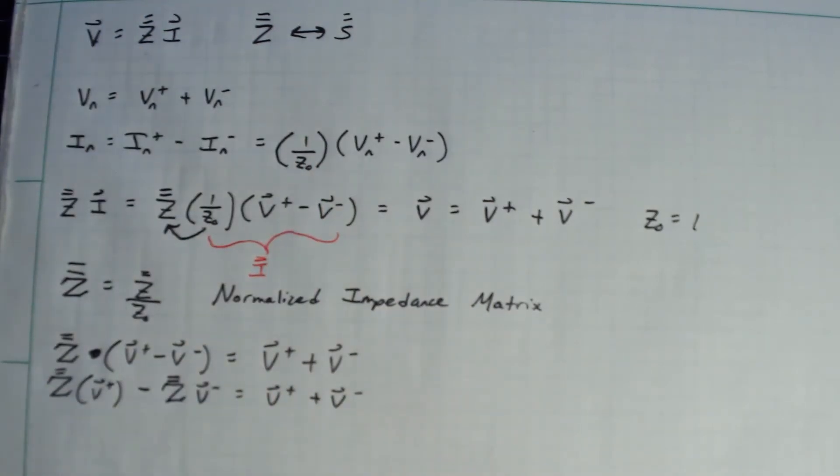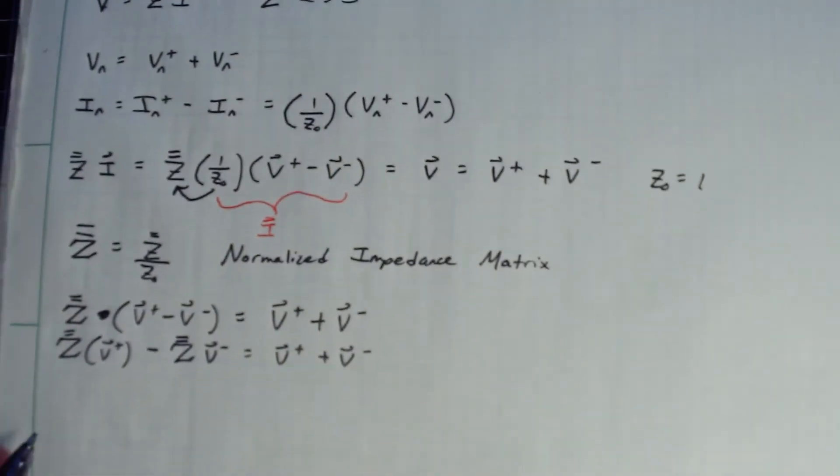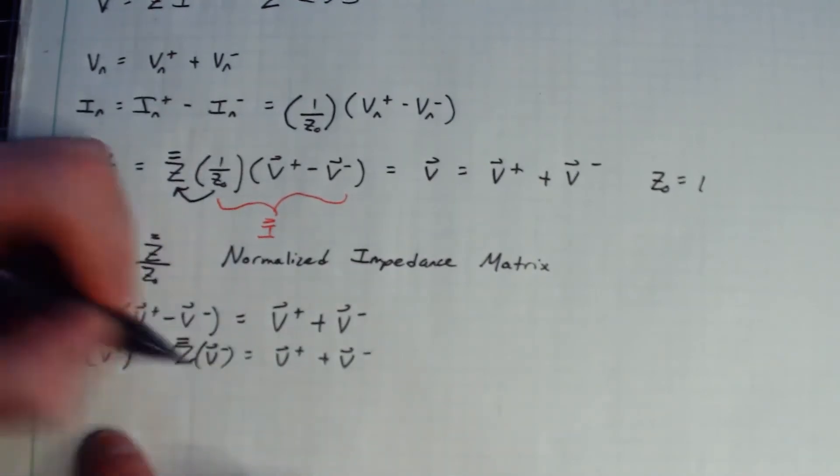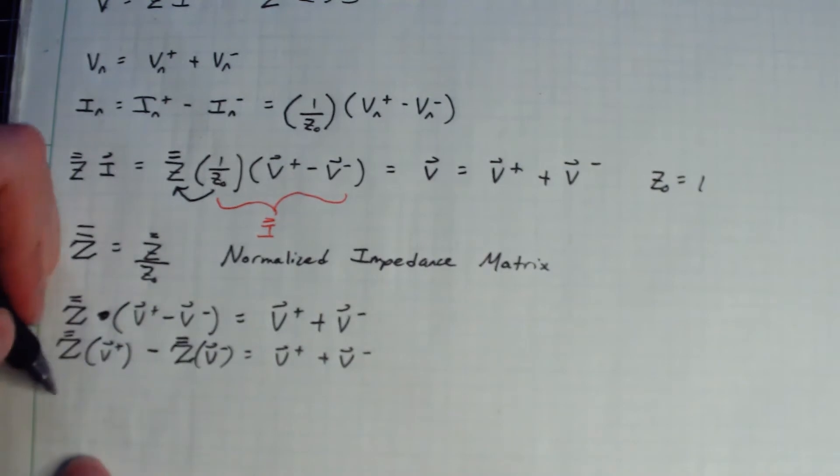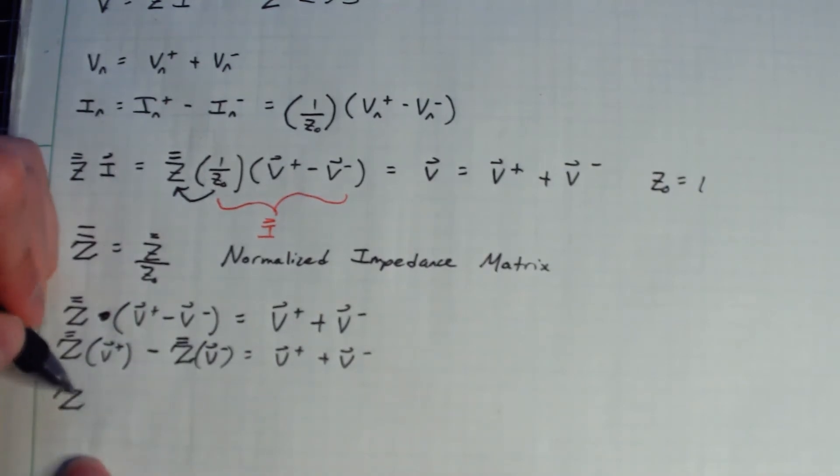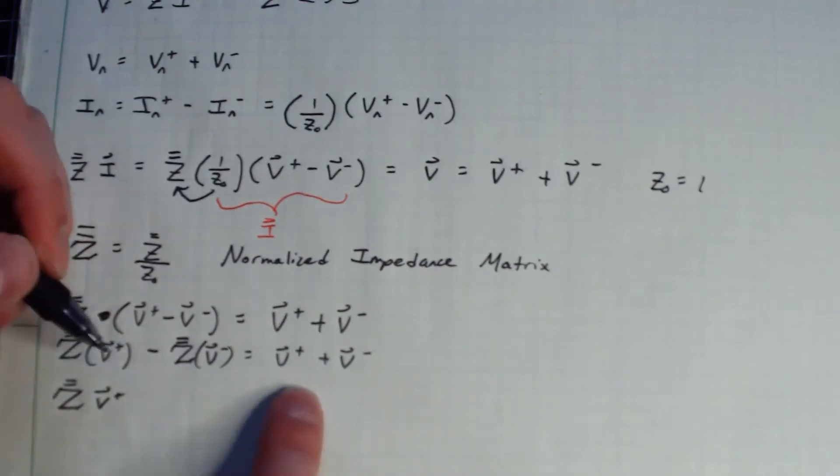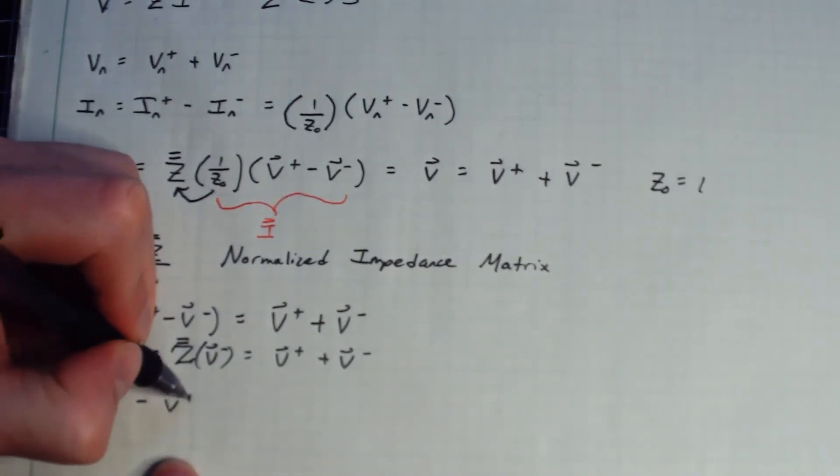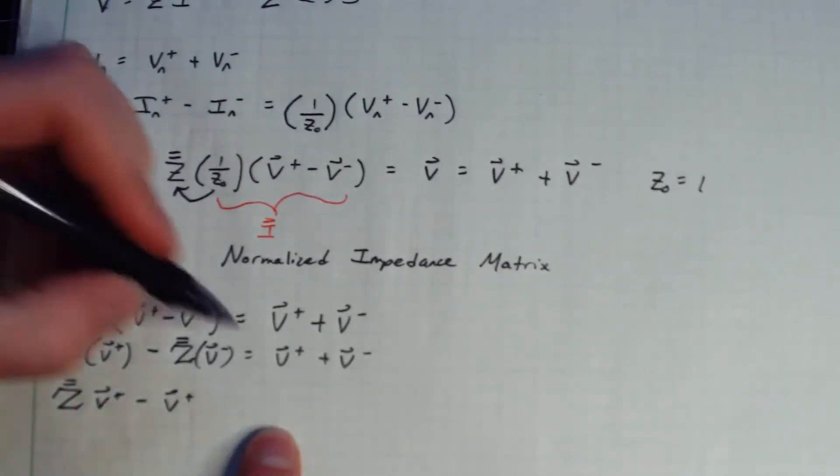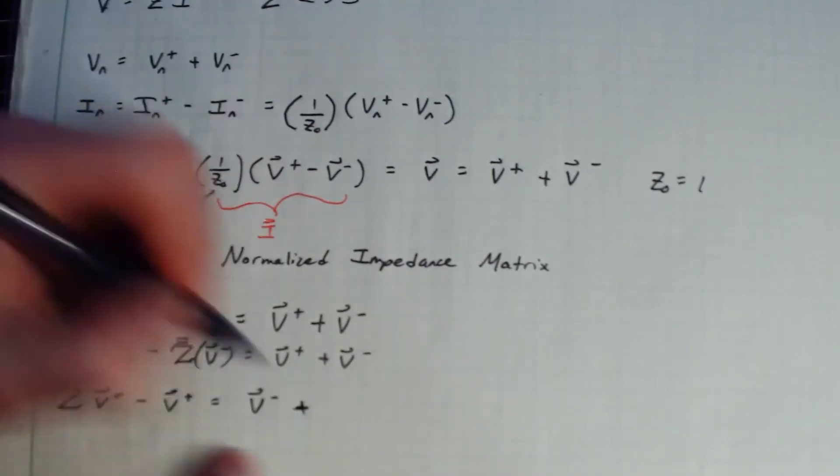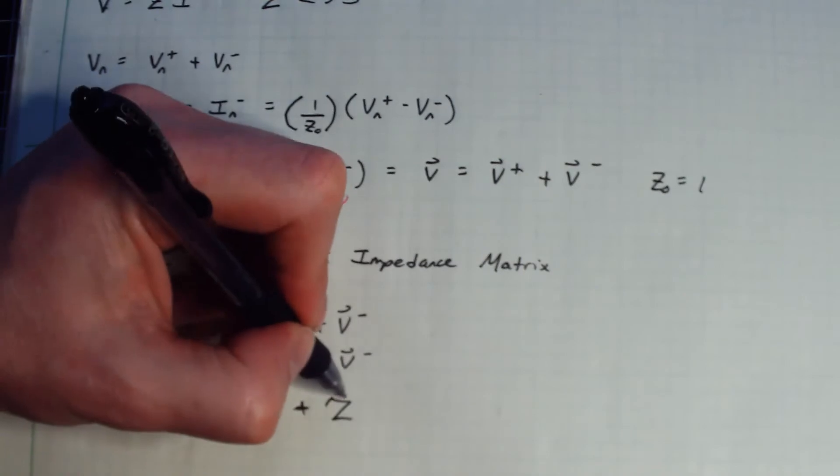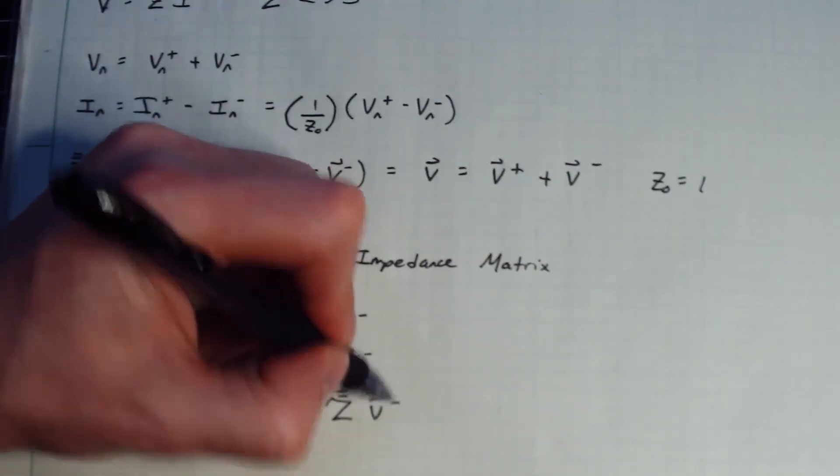I'm going to rearrange some terms. And we will get, so this is a matrix times a vector here. So we'll move around. So Z times V plus minus V minus, sorry, yeah, minus V plus is equal to V minus plus Z V minus.